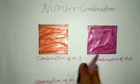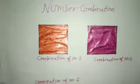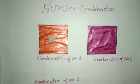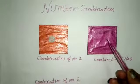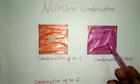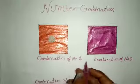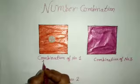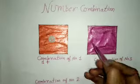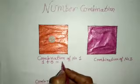Here I draw two boxes. How many buttons I shift in the first box? One. Here is no button in the second box — zero. First box me one button hai. Combination of number one: one plus zero equal to one.